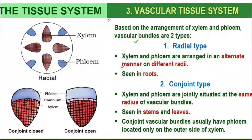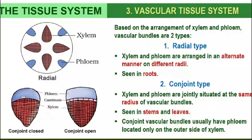Vascular bundles are also classified into two types based on the arrangement of xylem and phloem: radial type and conjoined type. In the radial type, xylem and phloem are arranged alternately on different radii.